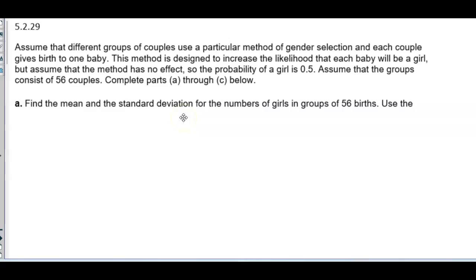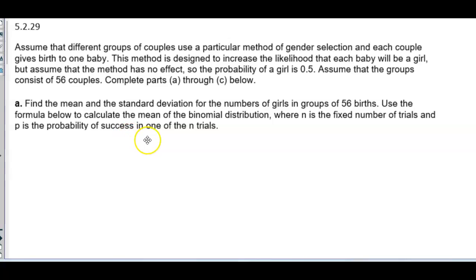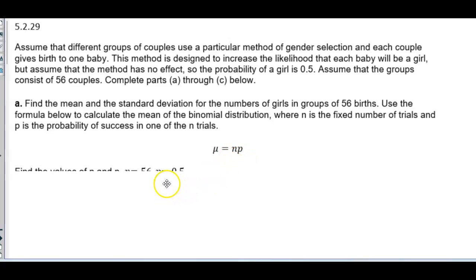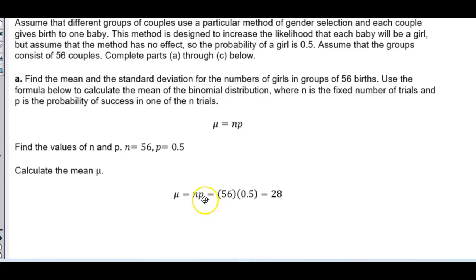Part A: find the mean and the standard deviation for the numbers of girls in groups of 56 births. Use the formula for the mean of the binomial distribution where n is the fixed number of trials and p is the probability of success in one trial. The formula is mu equals n times p. We know n equals 56 and p equals 0.5, so the mean equals 56 times 0.5, which equals 28.